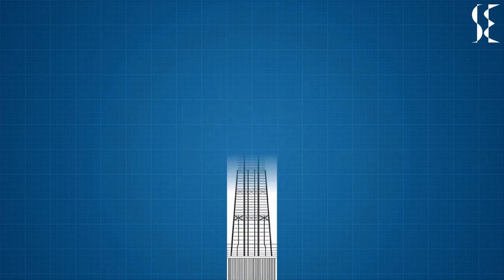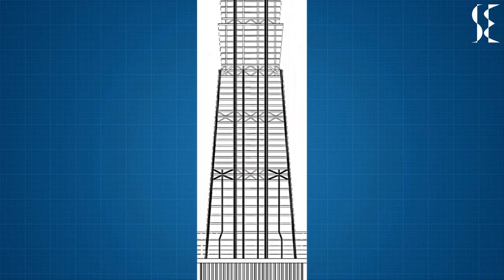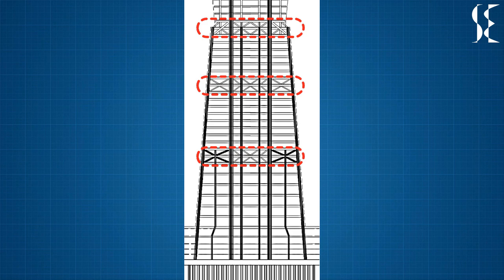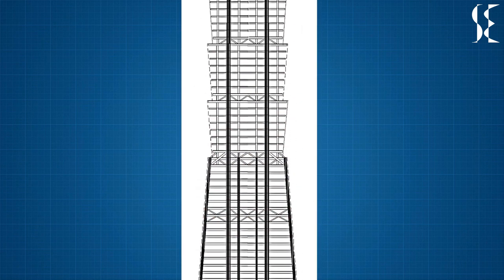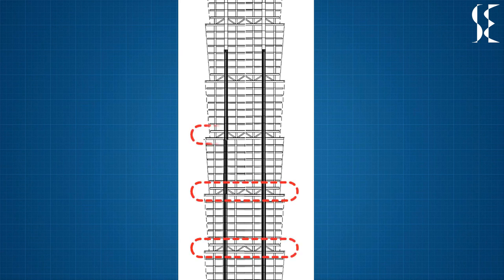In Taipei 101, belt trusses below level 27 are 2 storey deep at levels 9, 19 and 27. For upper floors, the belt trusses are single storey deep every 8 floors tying main perimeter columns by cross-bracing. These belt trusses gather and transfer perimeter weight to two super columns on each face.